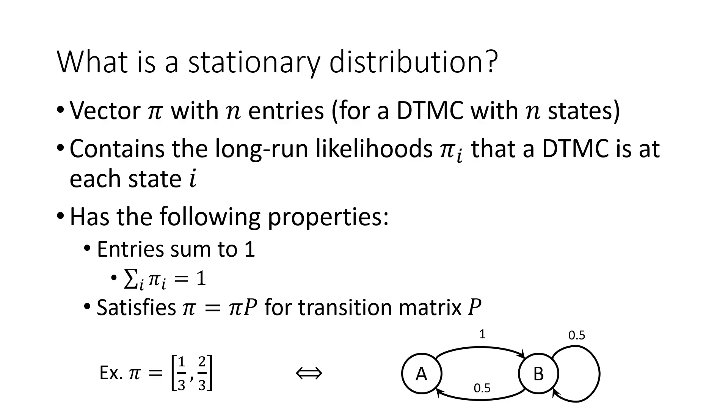We might reach such a stationary distribution from this state diagram, which should make intuitive sense, as we are going from A to B twice as much as we are going from B to A, and the long-run likelihood that we are at B is twice that of the long-run likelihood that we are at A.